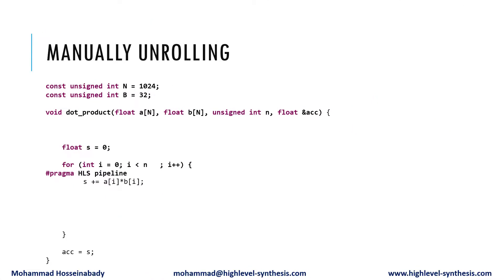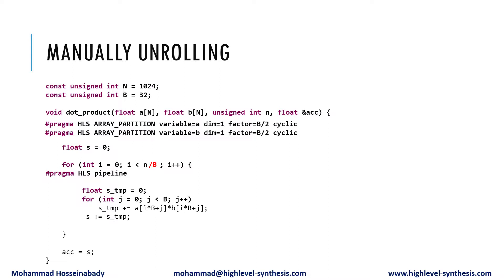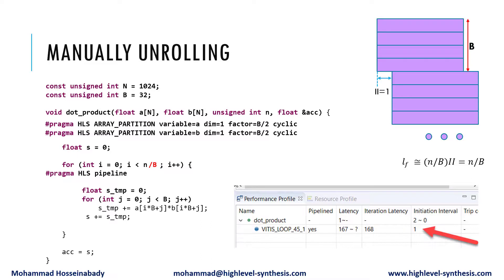Now let's manually unroll the loop. For this purpose, we can divide the loop upper bound by b, then add another loop to represent the parallel b loop iterations. We also need to partition the vectors. Now after synthesizing the code using Vitis HLS, the loop initiation interval would be 1. That means the code needs n divided by b cycles to finish. In other words, the code is b times faster.